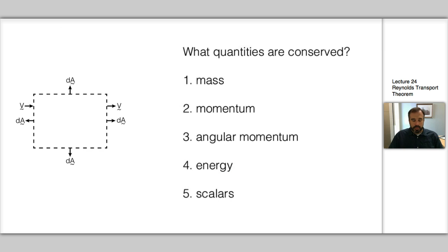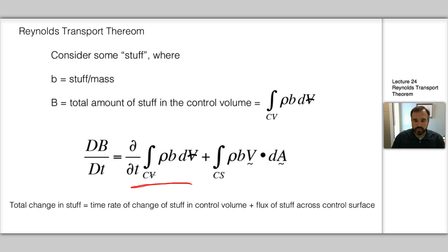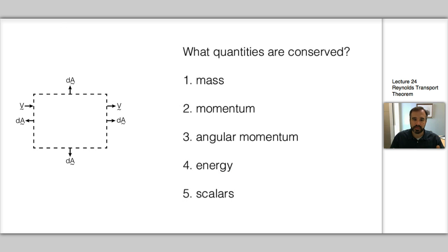And I'd like to point out before we move on that second term, the flux across the control surface, is again our velocity, the dot product of our velocity vector and our differential area vector dA with a tilde underneath it. And what that allows us to do is it inherently builds in the directionality.